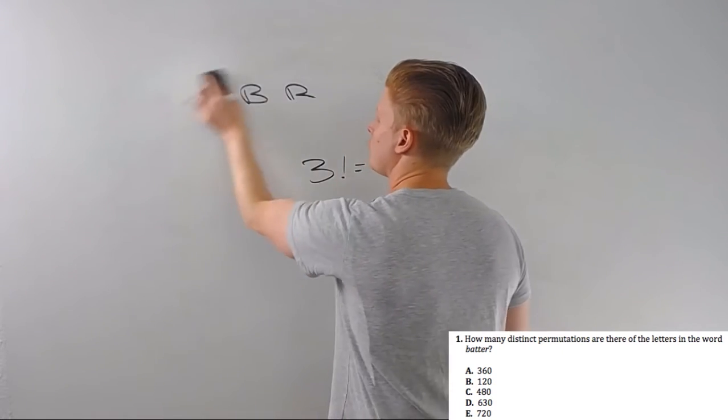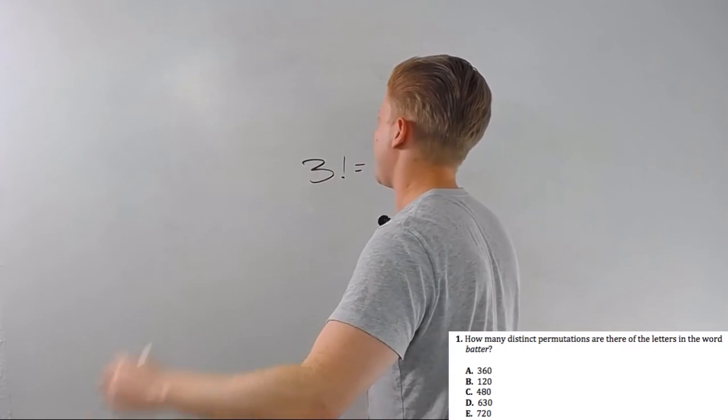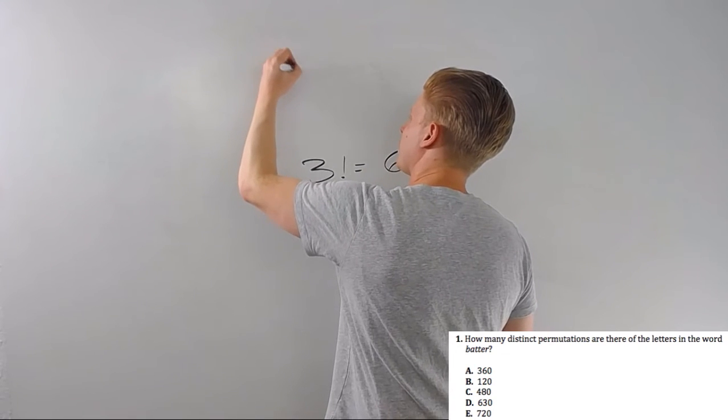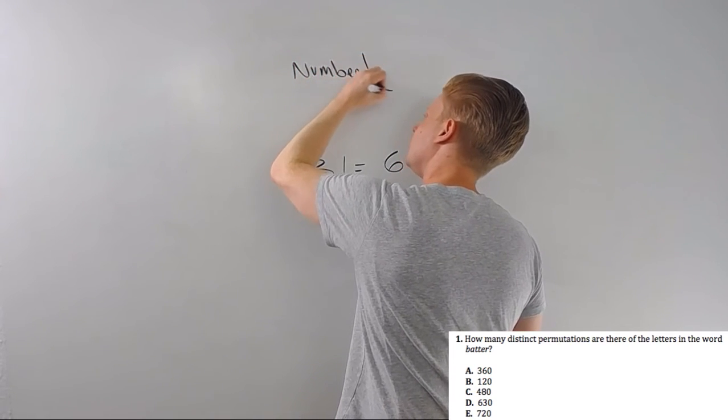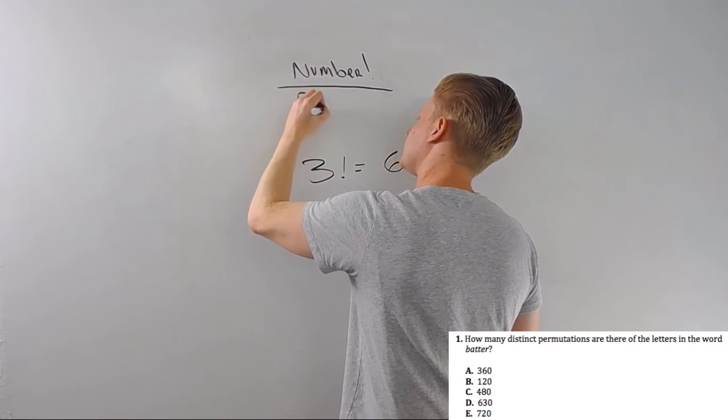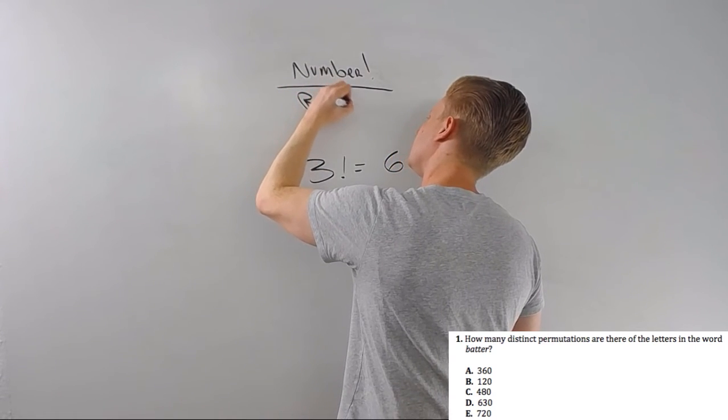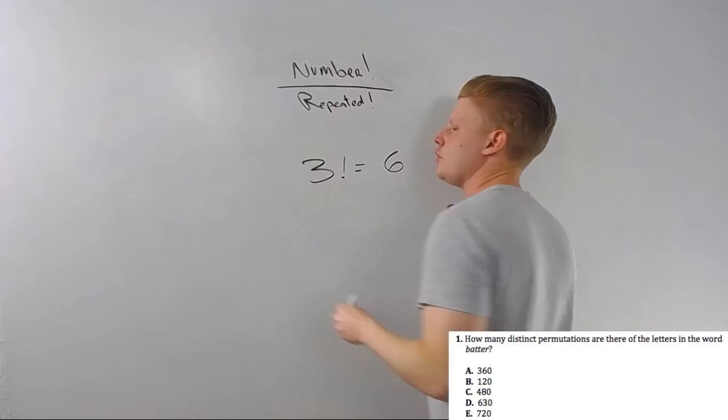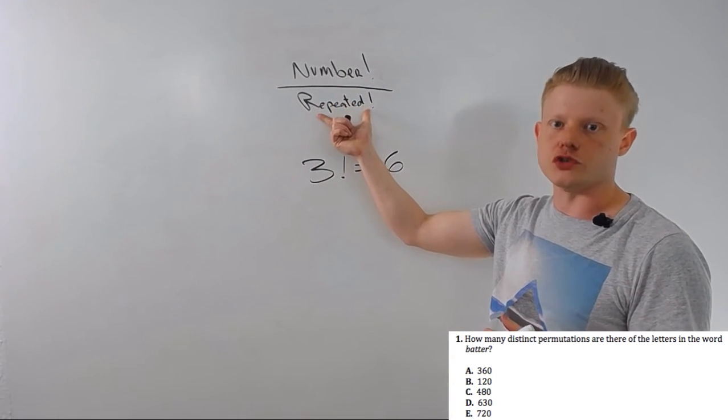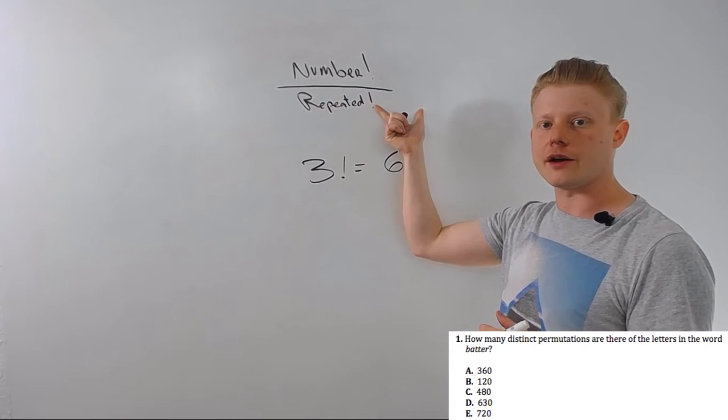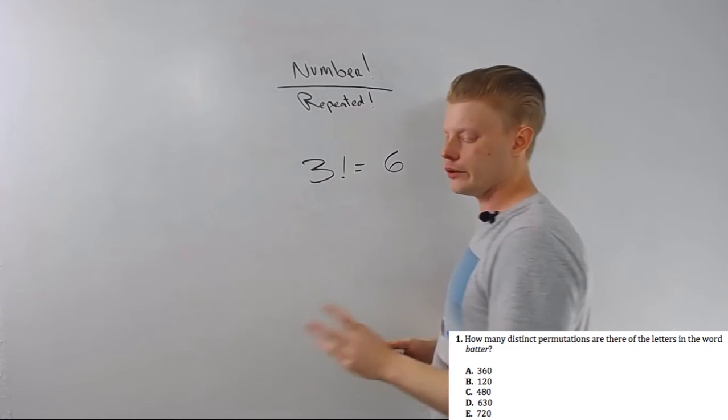So to find the number of distinct permutations something has, it's the number of things, factorial, over repeated things, factorial. Now, if you had like a couple things that were repeated, it'd be like how many times the first one showed up factorial times how many times the second one showed up factorial. We don't need to worry about that here.